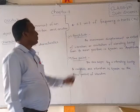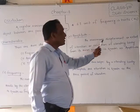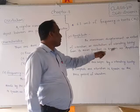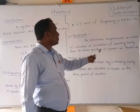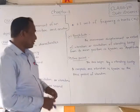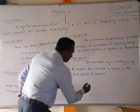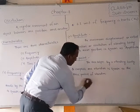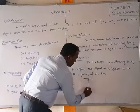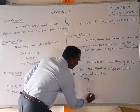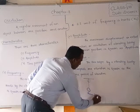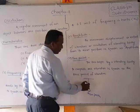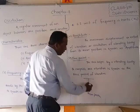Next, let's discuss amplitude. Amplitude is the maximum displacement or extent of the vibration or oscillation of a vibrating body from its mean position. Suppose this is the mean position — the object vibrates from this mean position.